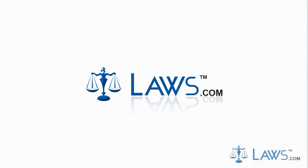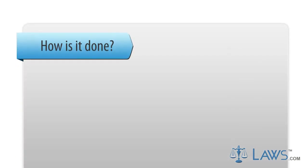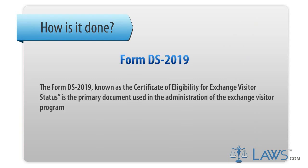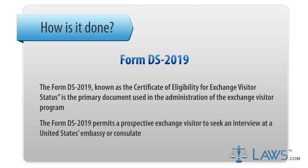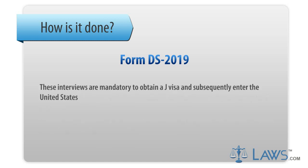Laws.com Legal Forms Guide. The Form DS-2019, known as the Certificate of Eligibility for Exchange Visitor Status, is the primary document used in the administration of the Exchange Visitor Program. The Form DS-2019 permits a prospective Exchange Visitor to seek an interview at a United States Embassy or Consulate. These interviews are mandatory to obtain a J-Visa and subsequently enter the United States.